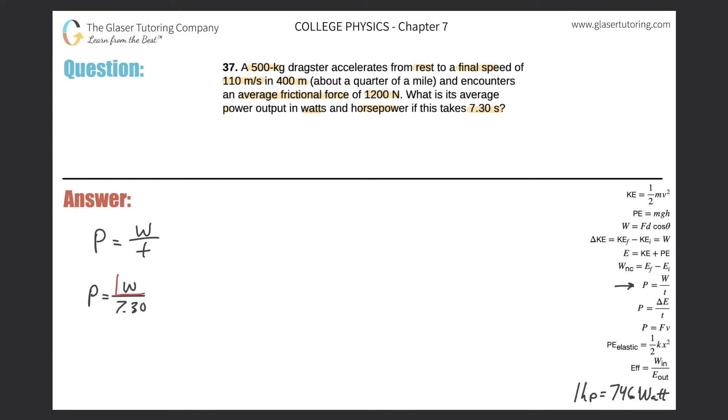Really my power here is going to be equal to some work value divided by 7.30 seconds. So if I can just calculate the amount of work done, then I can calculate my power. My question no longer is about power. My question is about how much work is being done? Let's take a look at the information that's given.